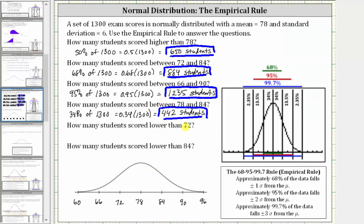Next, how many students scored lower than 72? The score of 72 is one standard deviation below the mean. We know 78 is the median, so 50% of students scored less than 78. We also know the percent between the mean and one standard deviation below the mean — this interval — is 34%. Therefore, the percent below 72 equals 50% minus 34%, which is 16%.